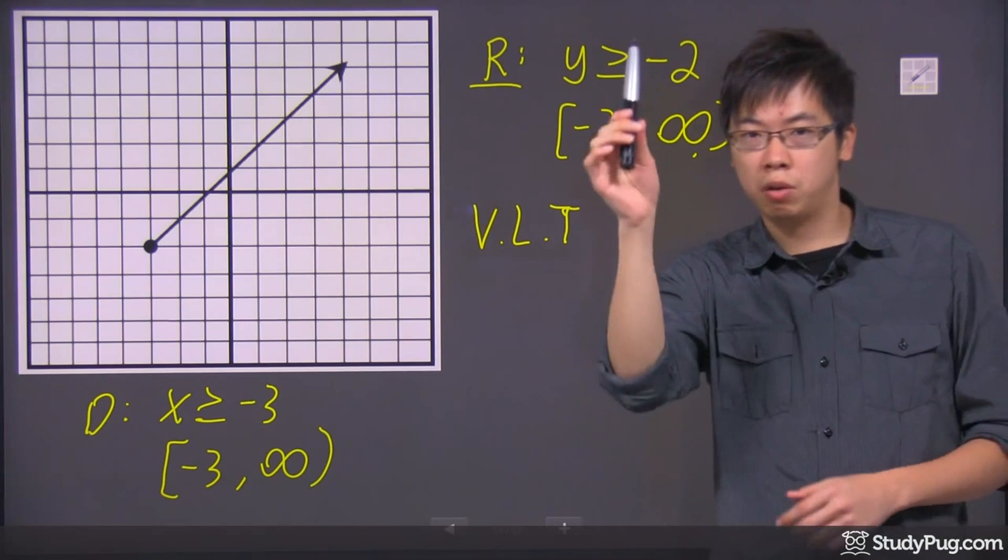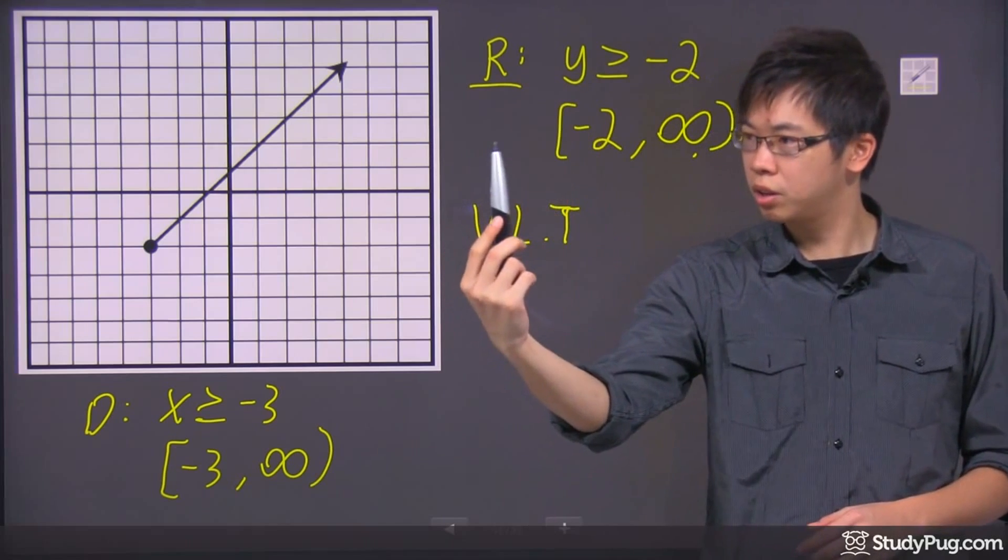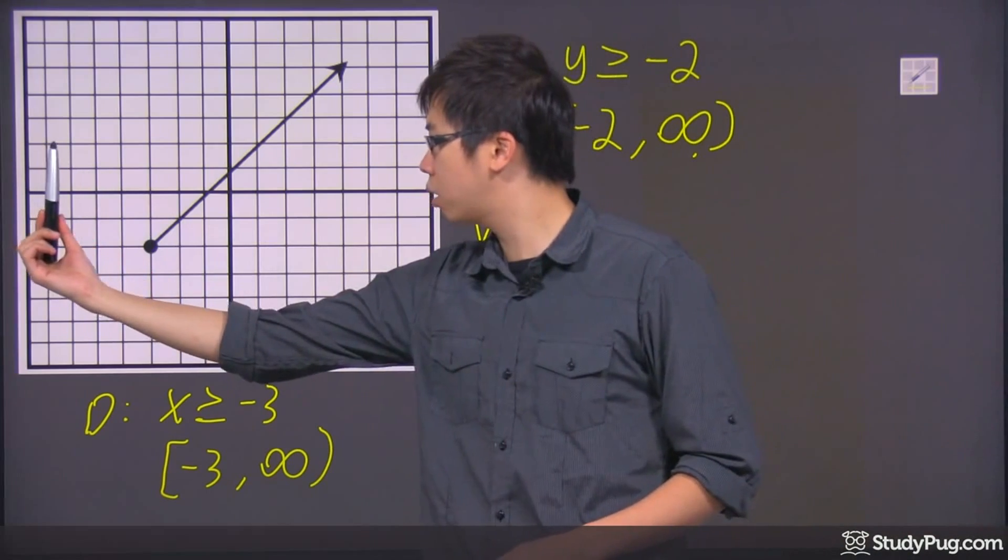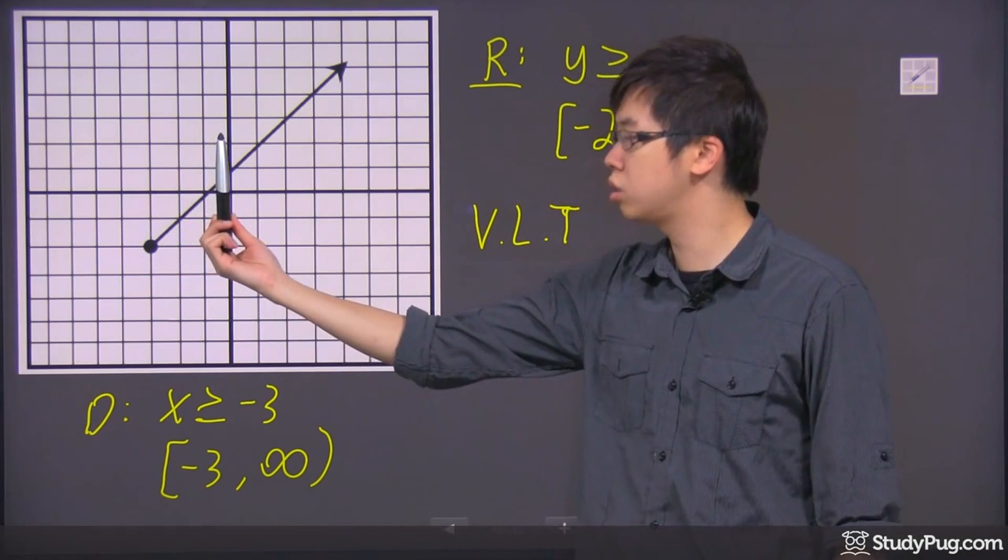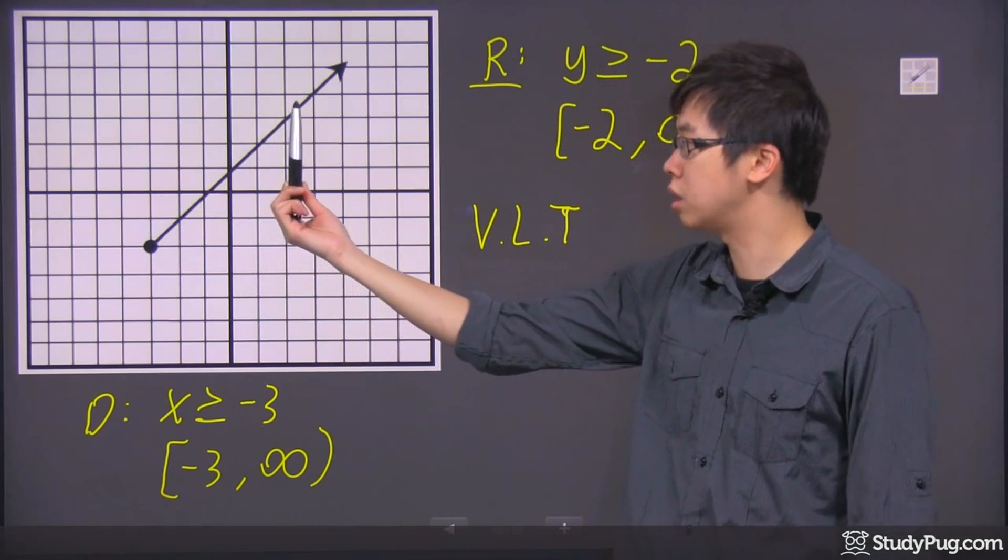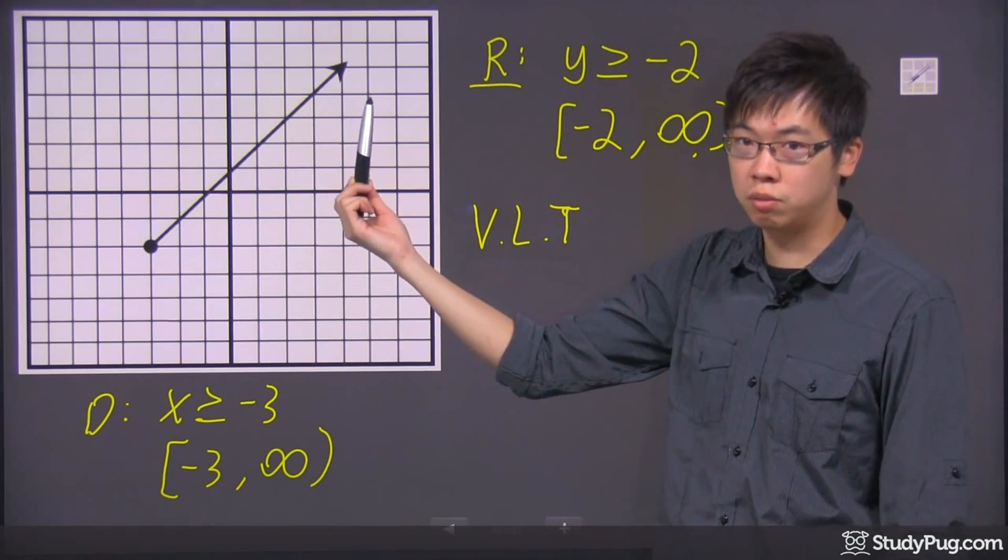What does that mean? It means you pick your pen or pencil, hold it vertically, straight up, and then you just have to move it across. Once it starts touching your function, which is your graph, as long as it touches once as it moves across, then it is still a function.